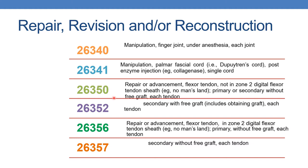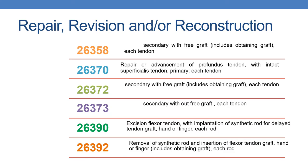The next is 26350: repair or advancement, flexor tendon, not in zone 2 digital flexor tendon sheath, primary. For secondary without free graft, it is reported with 26357. The next CPT is 26358: secondary with free graft.